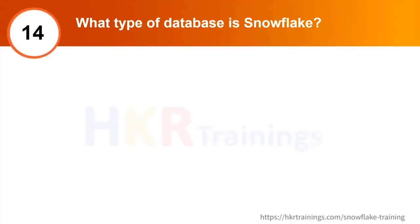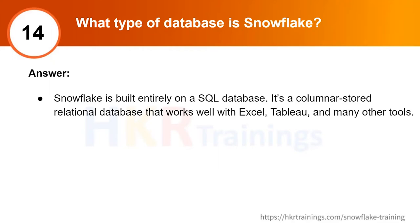What type of database is Snowflake? Among various database types — document store, relational, key-value, graph — Snowflake is built entirely on SQL and accessed in rows and columns. It is a column-oriented or column-stored database. Row-stored databases are mostly used in OLTP systems, while column-stored databases like Snowflake or Redshift are best suited for analytical systems. Snowflake integrates easily with tools like Excel, Tableau, or other visualization sources.